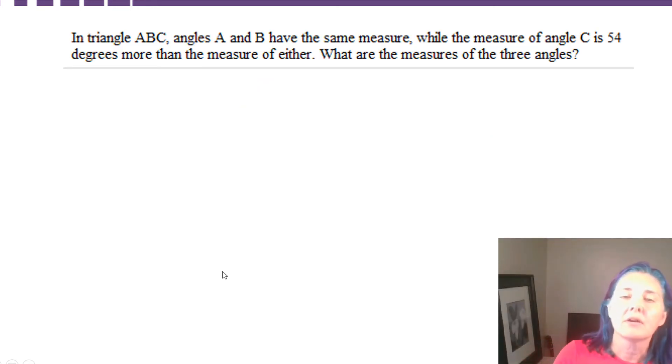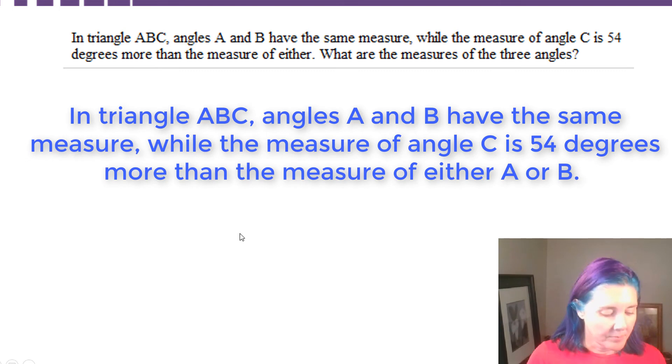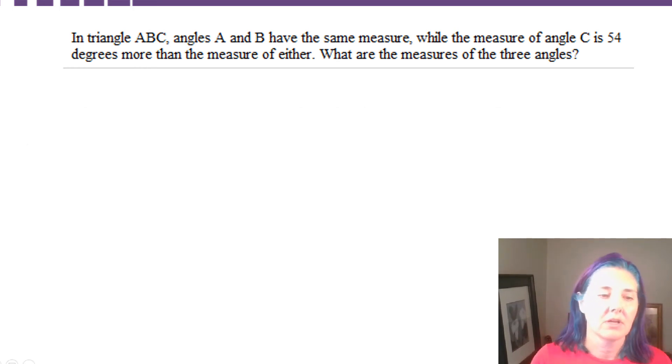Here's another homework example from MyLabs. It says, in triangle ABC, angles A and B have the same measure, while the measure of angle C is 54 degrees more than the measure of either angle. What are the measures of the three angles? That's a lot to sort out.